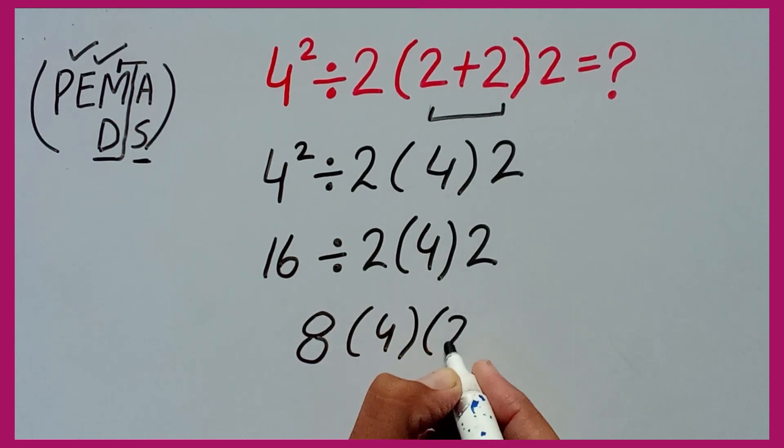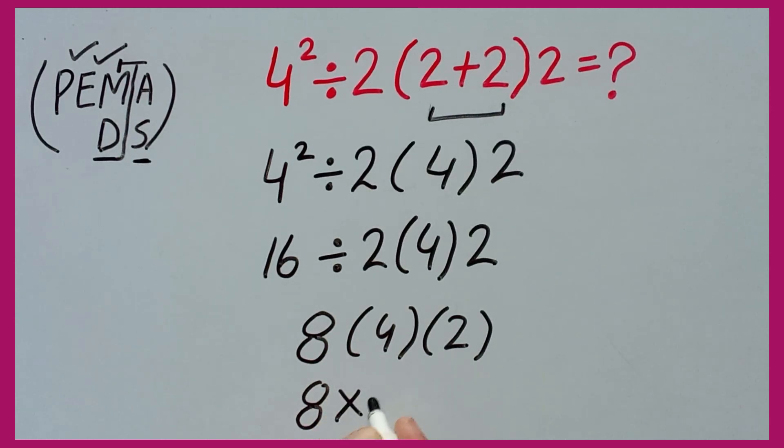and times 2. Now in the next step it can be equal 8 multiply by 8, and 8 multiply by 8 equals 81. This is the final answer of this question.